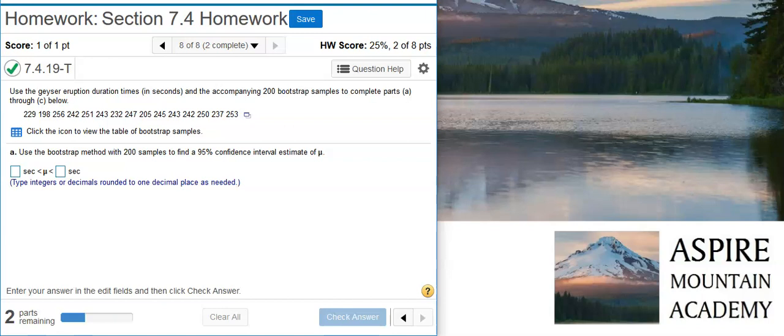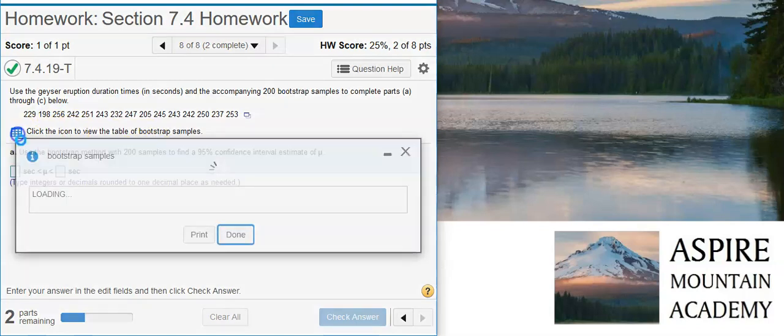Part A wants us to use the bootstrap method with 200 samples to find a 95% confidence interval estimate of the population mean. To do that, the first thing we need to do is take these bootstrap samples and stick them in StatCrunch.